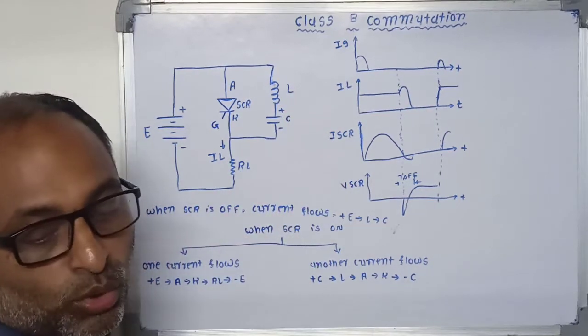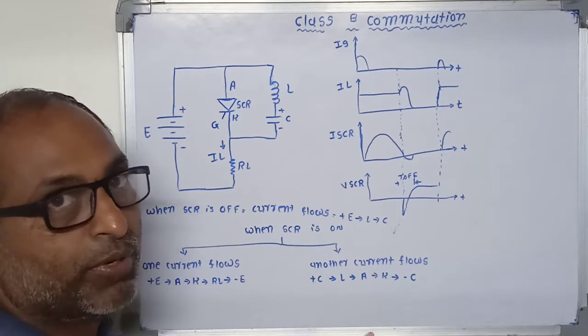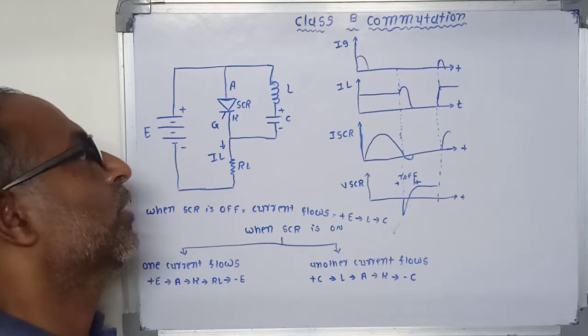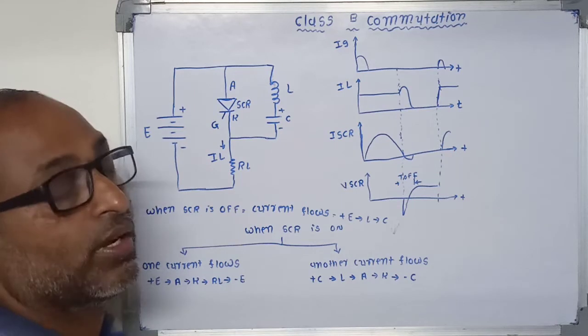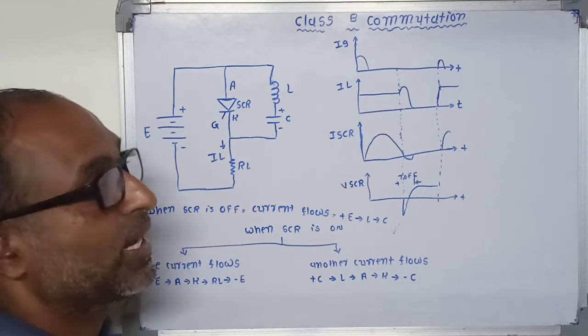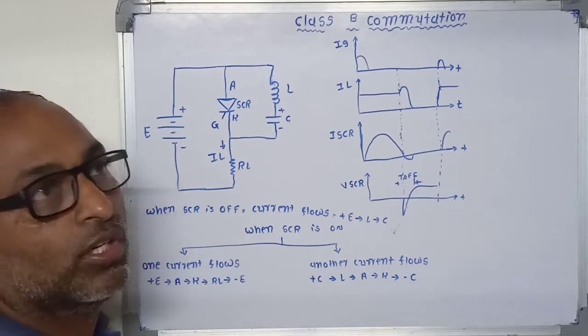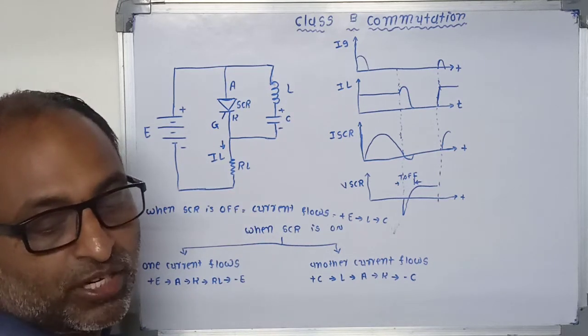The main difference in Class B is that the inductor and capacitor do not carry the load current. While in Class A type commutation, the inductor and capacitor also carry the load current. This is a major difference.